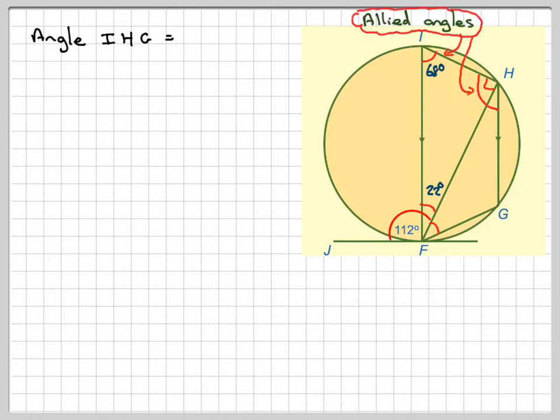this angle and this angle here are allied, therefore they add up to 180, therefore this angle here is 180 minus 68, which gives me 112.